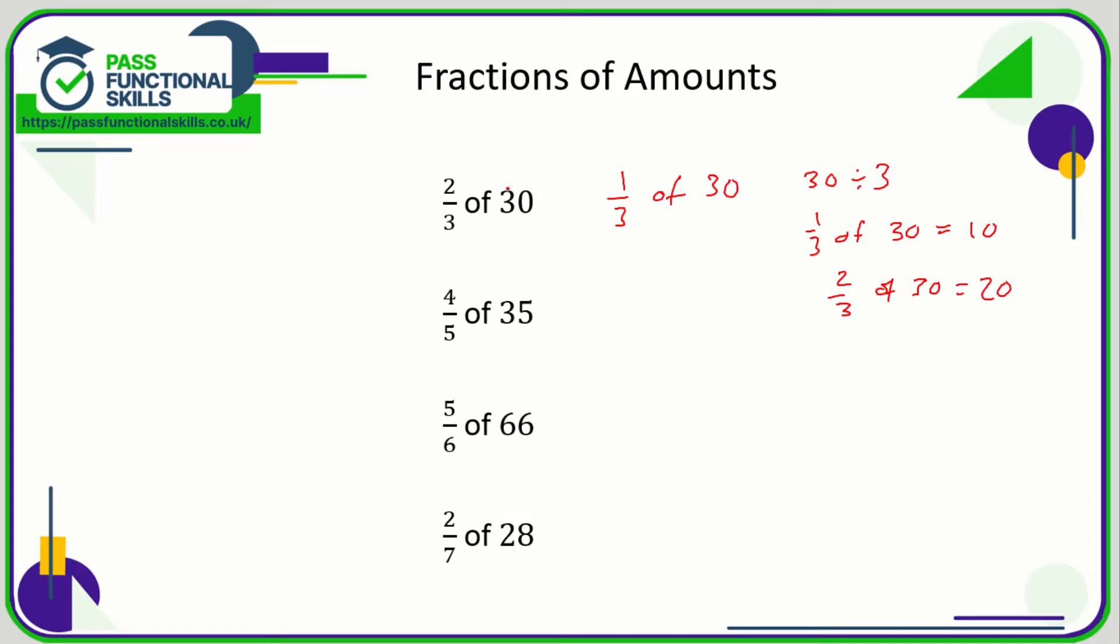A much easier way perhaps is just to remember: take your total, divide it by the number on the bottom, and then multiply it by the number on the top. So 30 divided by 3 is 10, 10 times 2 is 20 and we're done. So divide by the bottom number, multiply by the top number. So let's put that into practice.